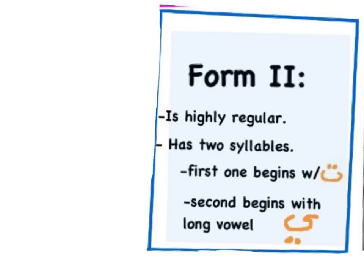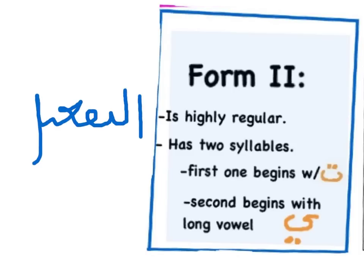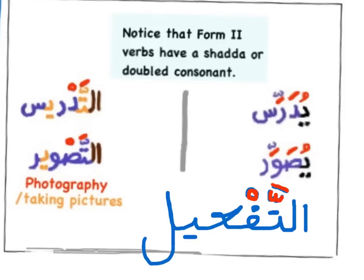Form 2 is highly regular. Its Mazdar pattern is Al-Taf'il. It has two syllables — the first begins with Ta, and the second begins with a long Yaa vowel. Note that Form 2 verbs have a Shadda (a doubled consonant). For example: يُدرِّس (he teaches) → التدريس (teaching/to teach); يُصوِّر (he photographs) → التصوير (photography/taking pictures).